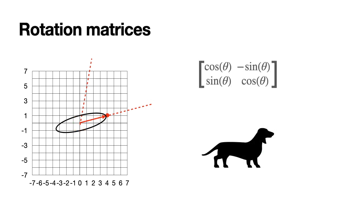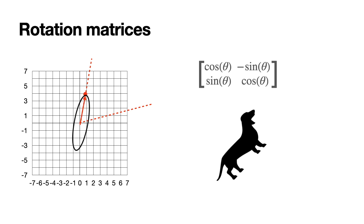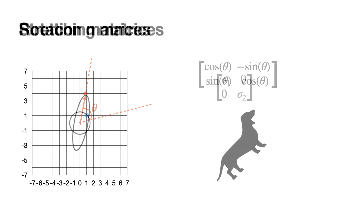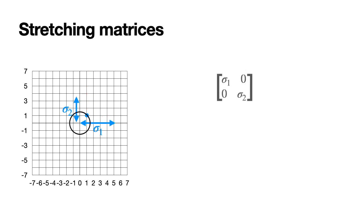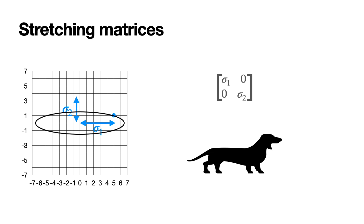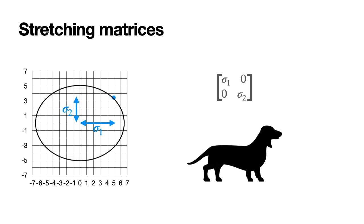Now some matrices are special. Rotation matrices look like this: cos θ, -sin θ, sin θ, cos θ, for some angle θ — they represent a rotation by angle θ. Diagonal matrices — those that only have elements σ₁ and σ₂ on the main diagonal and zeros everywhere else — represent scaling: horizontal stretching by a factor of σ₁ and vertical stretching by a factor of σ₂. If the factor is greater than 1, we stretch; if less than 1, we compress; if equal to 1, we do nothing. A negative value means stretching followed by a reflection over the axis.